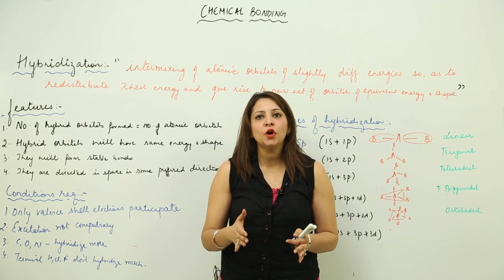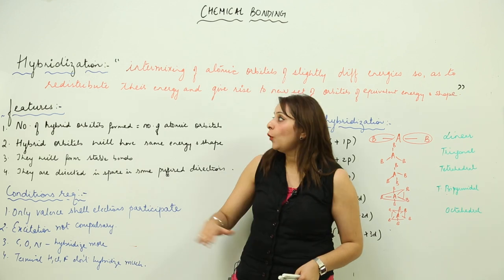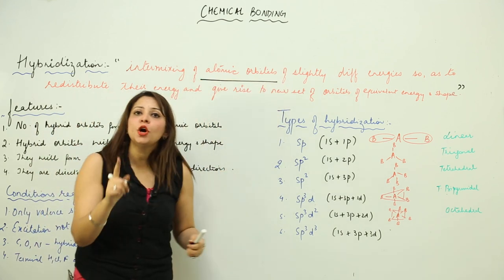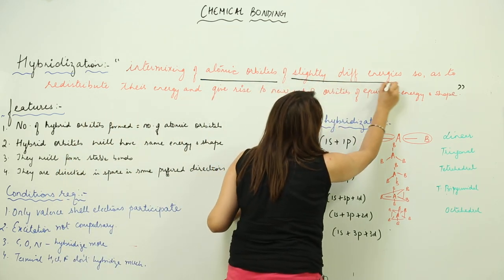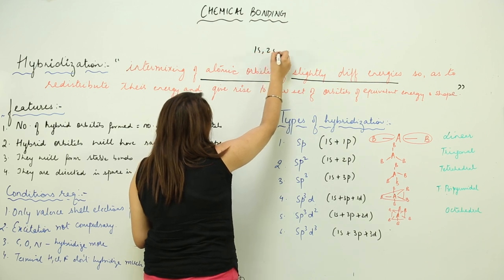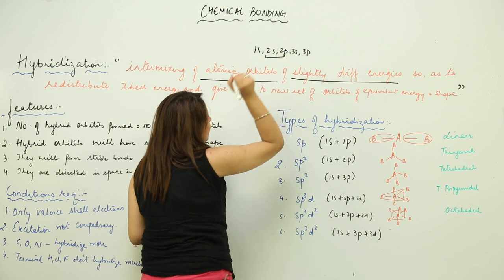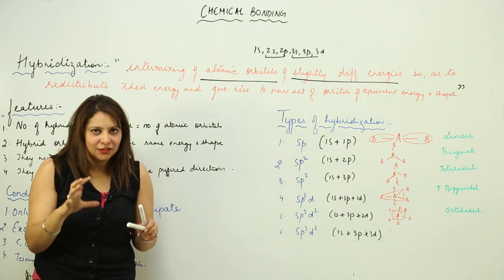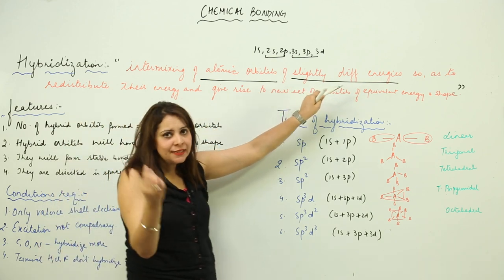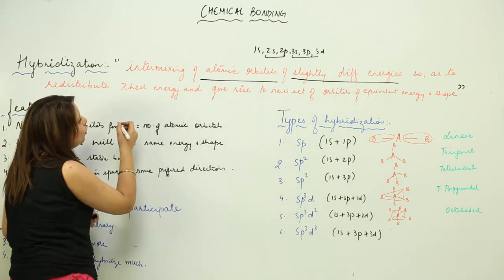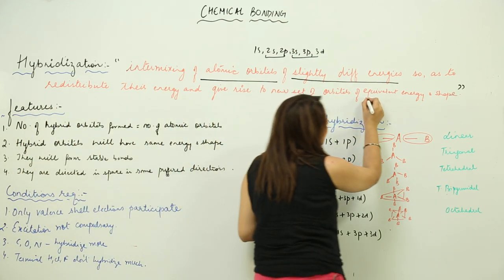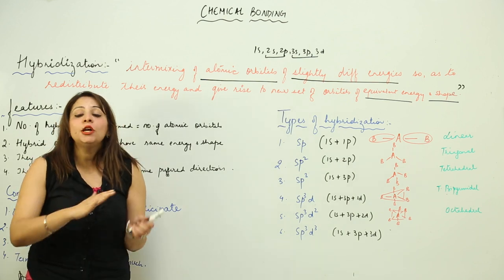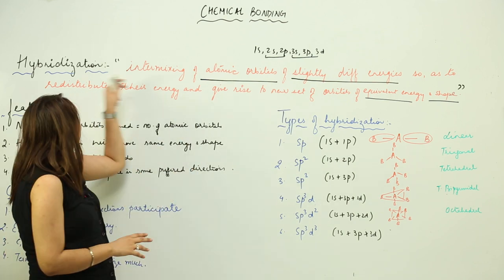Hybridization is the intermixing of atomic orbitals that have a slight difference in their energies. When these atomic orbitals intermix, they give rise to new orbitals called hybrid orbitals, which have the same energy and the same shape. These new orbitals are equivalent in shape and equivalent in energy — this is what hybridization is.